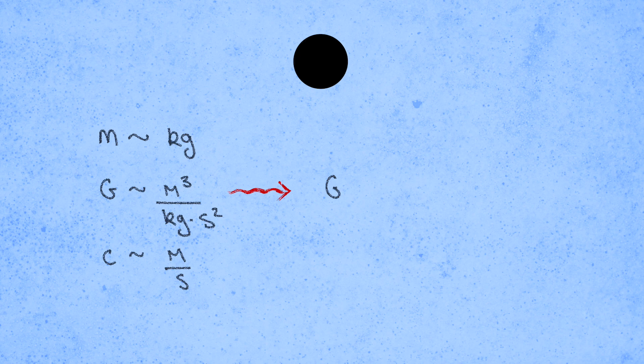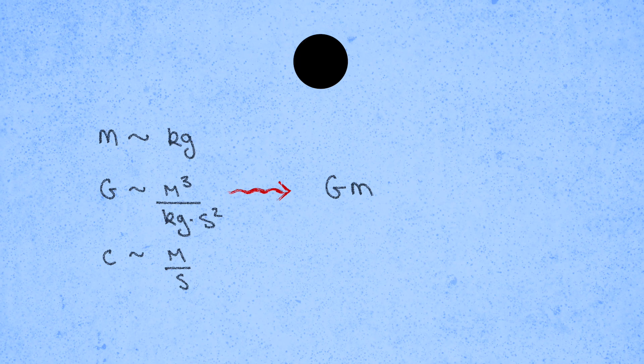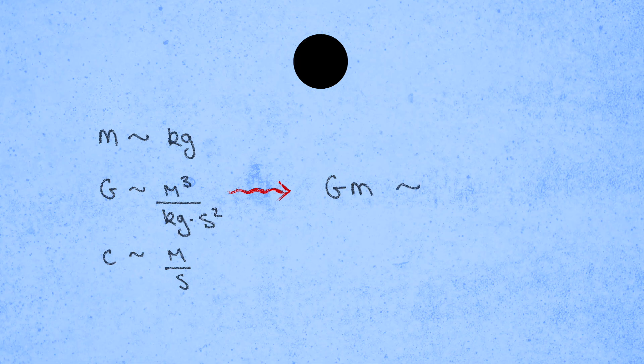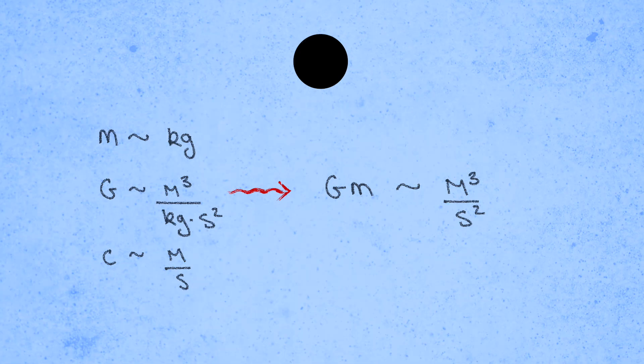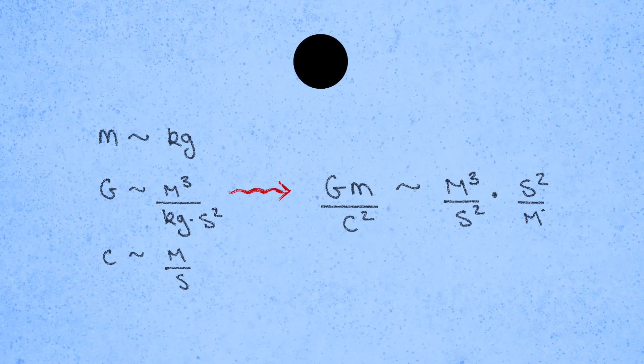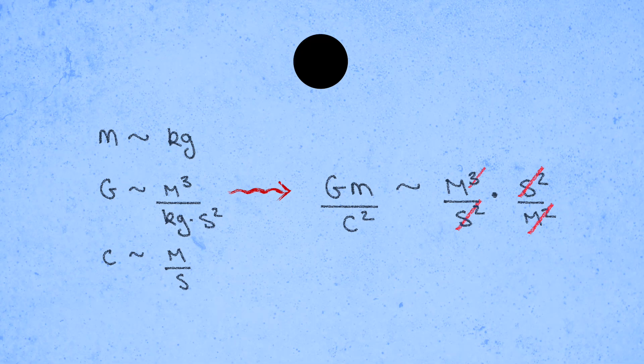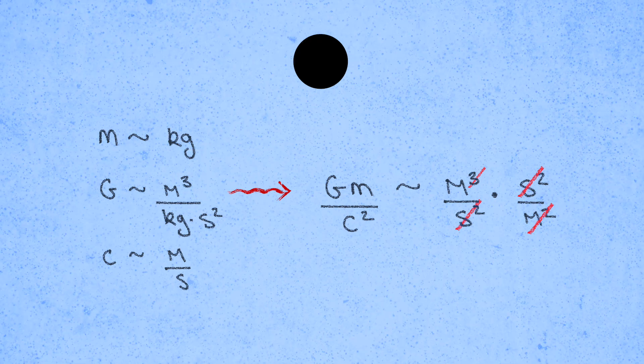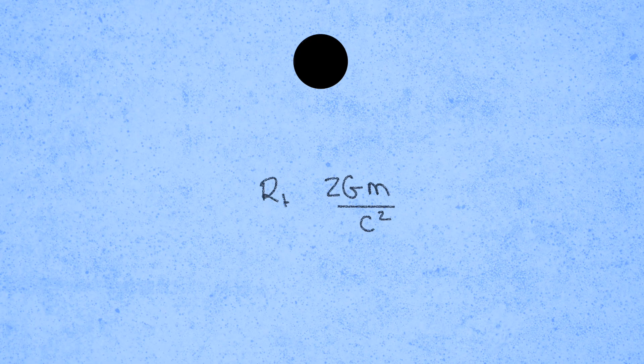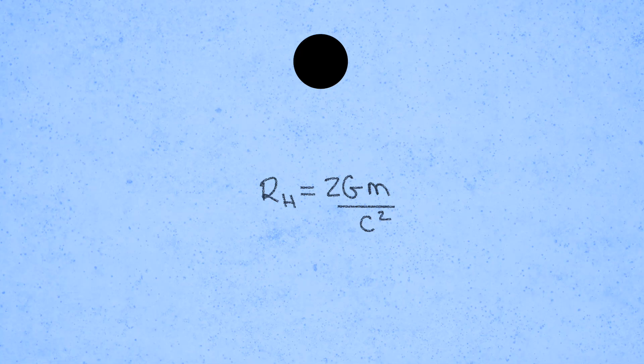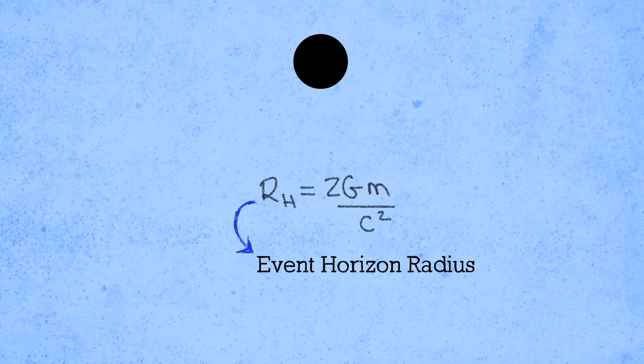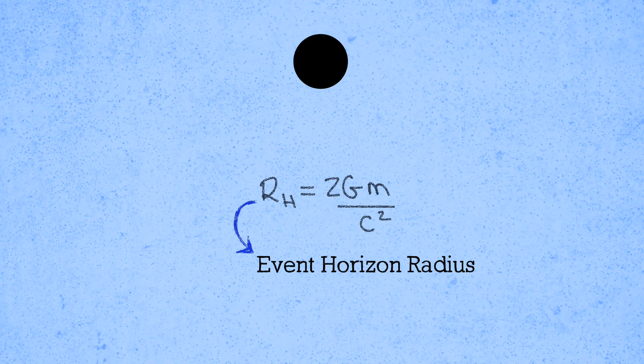First, we need to multiply m and g together to cancel out those factors of kilograms. That gets us meters cubed per second squared. And so if we further divide by c squared, the second squareds will cancel out and we'll be left with meters. Again, there's an additional factor of 2 in the actual answer that we can't get from dimensional analysis, isn't there always? And this is the event horizon radius of a Schwarzschild black hole.